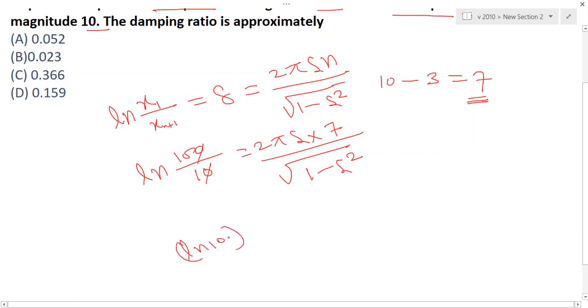After that, ln 10 - what will be the value? So just square this, and after that we just calculate the zeta value. We can easily calculate. So zeta value is equal to 0.052 after calculating. So A is the right answer for this question - that is 0.052 answer.